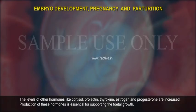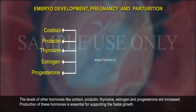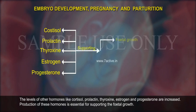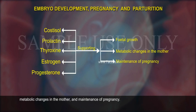The levels of other hormones like cortisol, prolactin, thyroxin, oestrogen and progesterone also increase. Increased production of these hormones is essential for supporting fetal growth, metabolic changes in the mother, and maintenance of pregnancy.